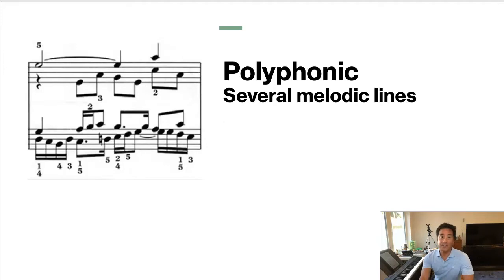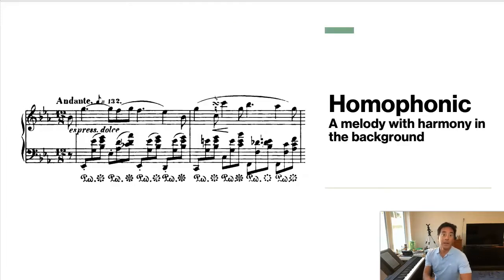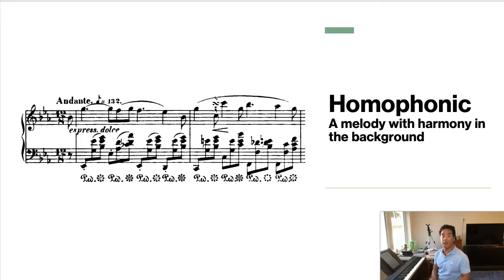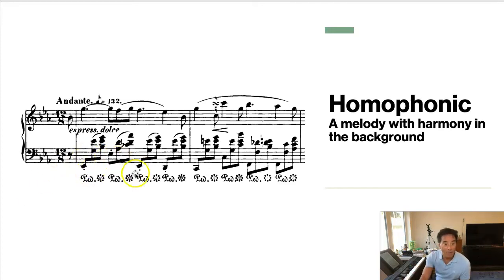It's several melodies at the same time, all competing. Now, the most often used texture is homophonic. Homophonic is a melody with some harmony underneath it in the background. This might be a person speaking in a room where you can see things around them to put things in context — and the context is the harmony and the bass line. The bass line is every third note that you see with the staccato, and it sounds like this.